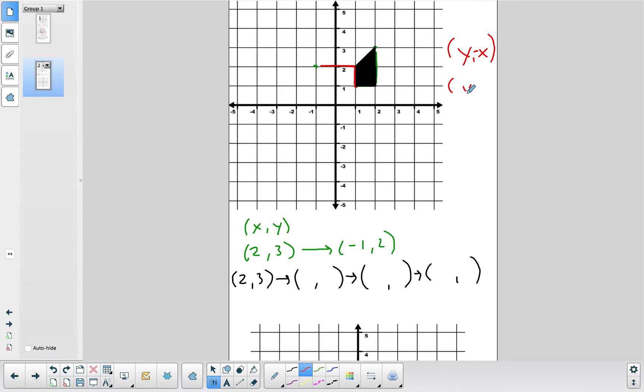Similarly, if we rotate 90 degrees in a counterclockwise direction, you're still changing the variables. However, this time, the variable that's in the x location would be negative.